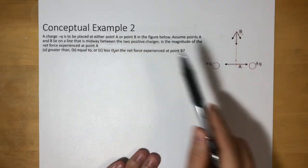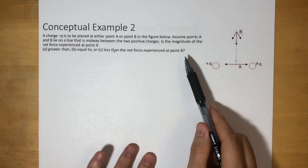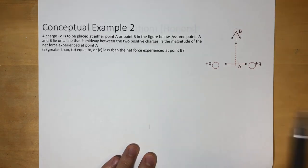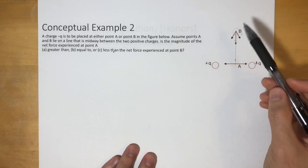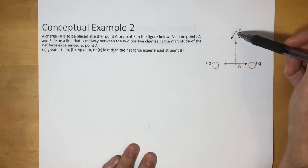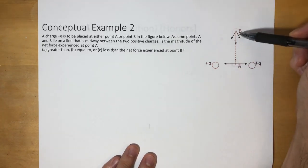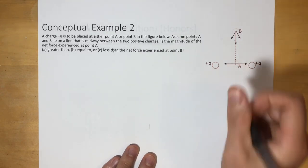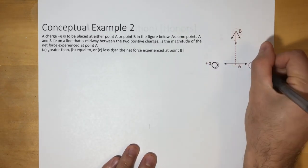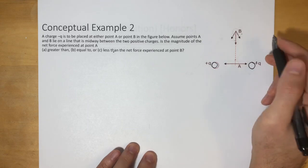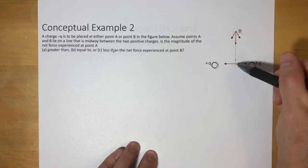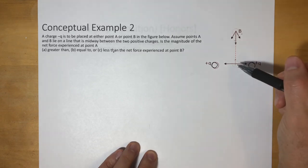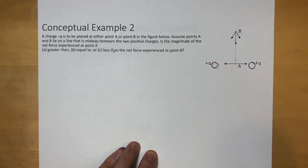A charge negative Q is to be placed at either point A or point B in the figure. Assume points A and B lie on a line that is midway between the two positive charges — one charge here and one charge here. Is the magnitude of the net force experienced at point A greater than, equal to, or less than the net force experienced at point B?